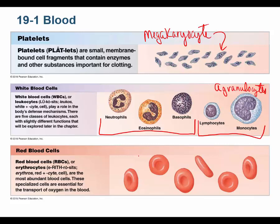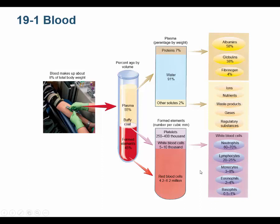We won't cover lymphocytes in detail until chapter 22, the immune chapter, but we'll do an overview today. Red blood cells are the majority of formed elements and their primary role is to carry oxygen — picking it up in the lungs and delivering it to all cells of the body.